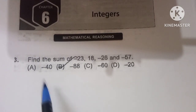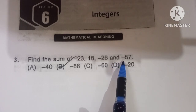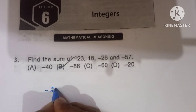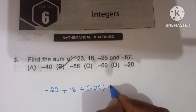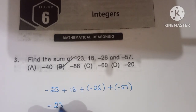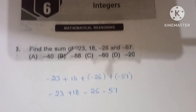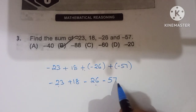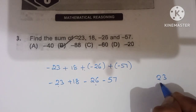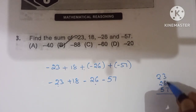Third question: find the sum of minus 23, 18, minus 26, and minus 57. So minus 23 plus 18 plus minus 26 plus minus 57. First we have to find the same sign numbers. Minus 23, minus 26, and minus 57 are like signs, so we add them: 23 plus 26 plus 57.